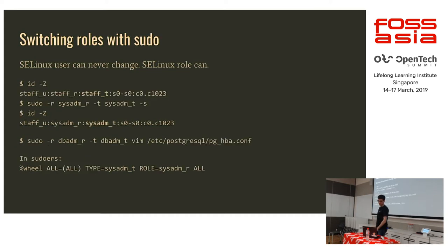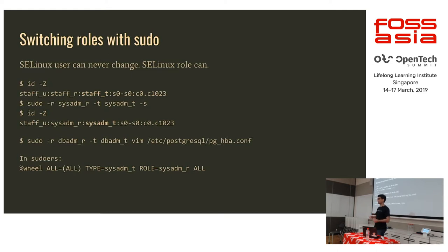Since manual newrole is clunky, you can use sudo — it understands SELinux. You can run sudo -r <role> -t <type> to specify the role and type. Or you can just add it to the sudoers file: anyone in the wheel group will automatically get the sysadmin role and type, so sudo -s will just work. You can also specify other roles like database admin manually when needed.